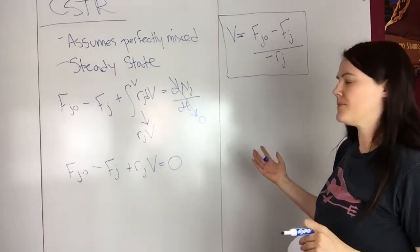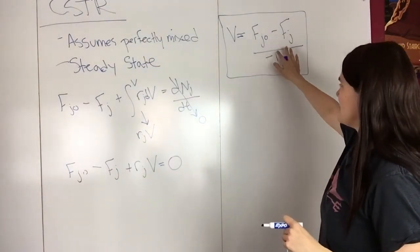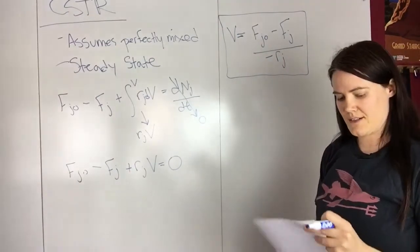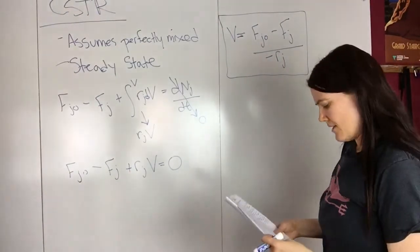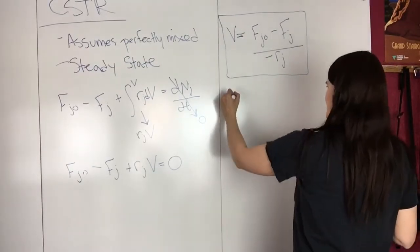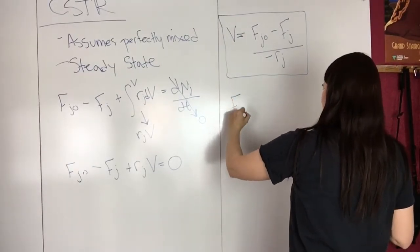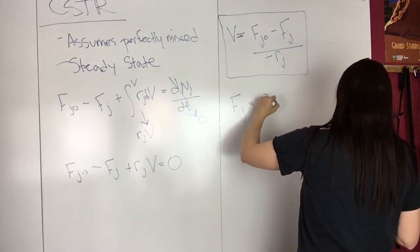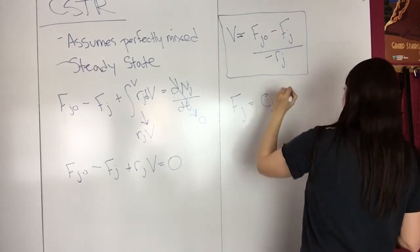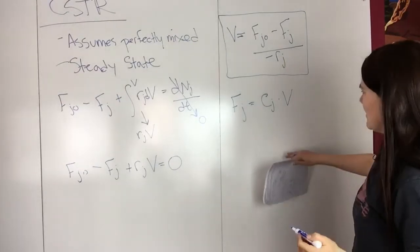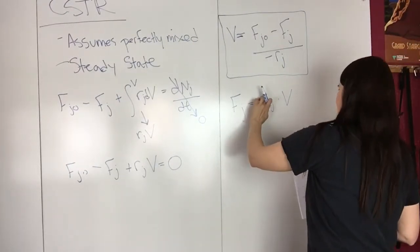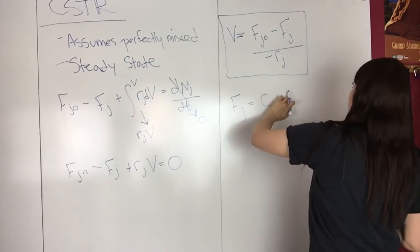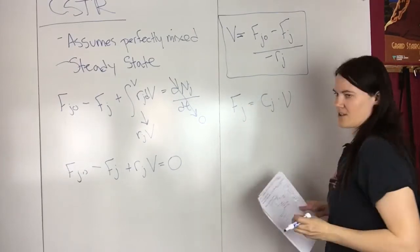You can take this further because often you solve problems using concentration instead of flow. You can use this relation: FJ equals CJ multiplied by the volumetric flow rate.